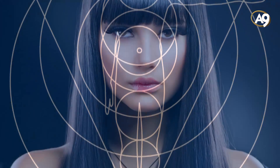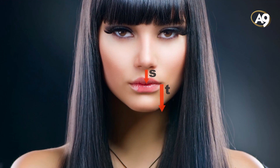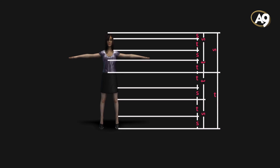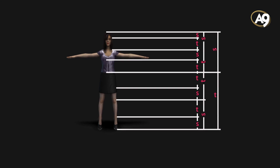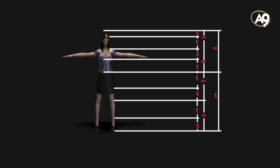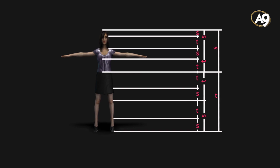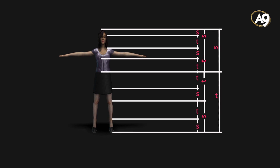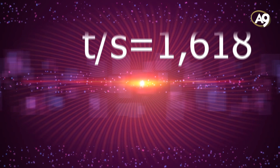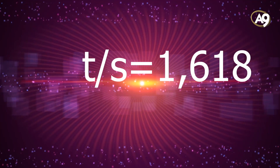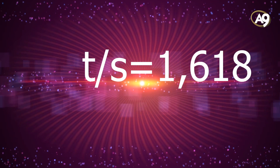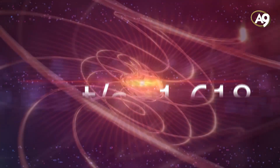The ideal proportional relations suggested as existing among various parts of the average human body — that approximately meet the Golden Ratio values — can be set out in a general plan. The T over S ratio in the table below is always equivalent to the Golden Ratio: T divided by S equals 1.618.